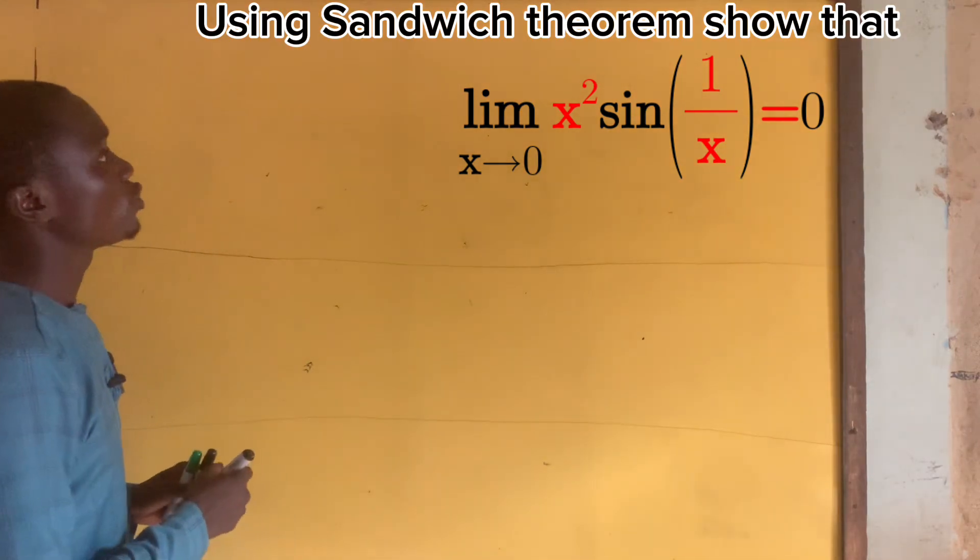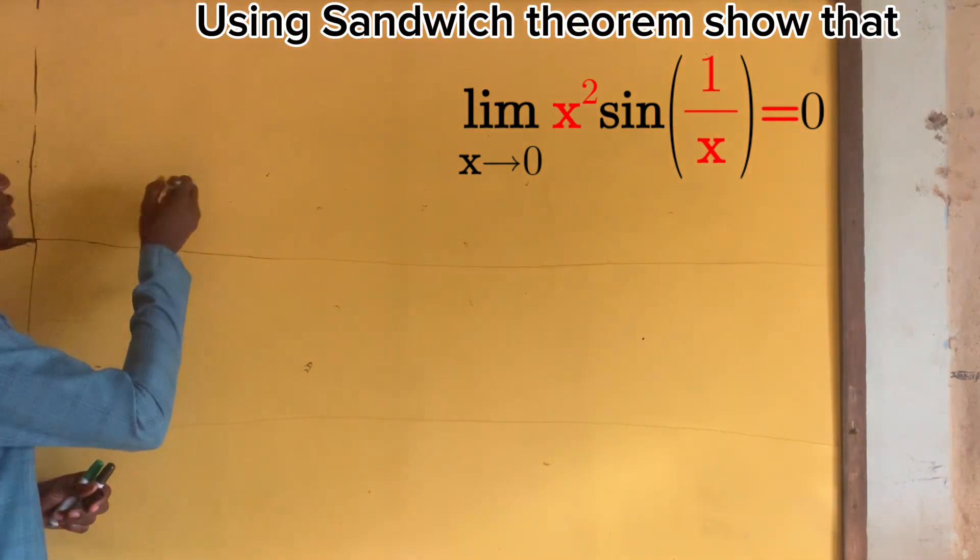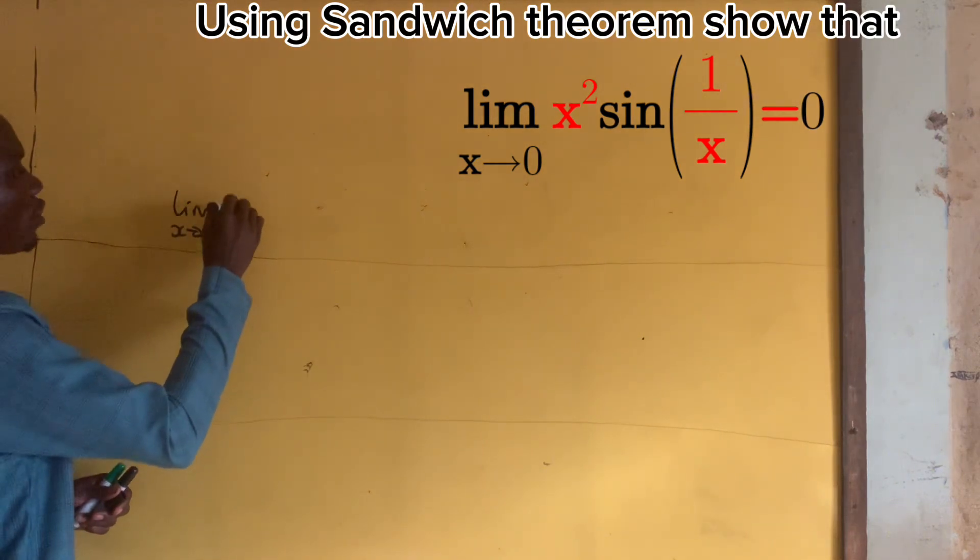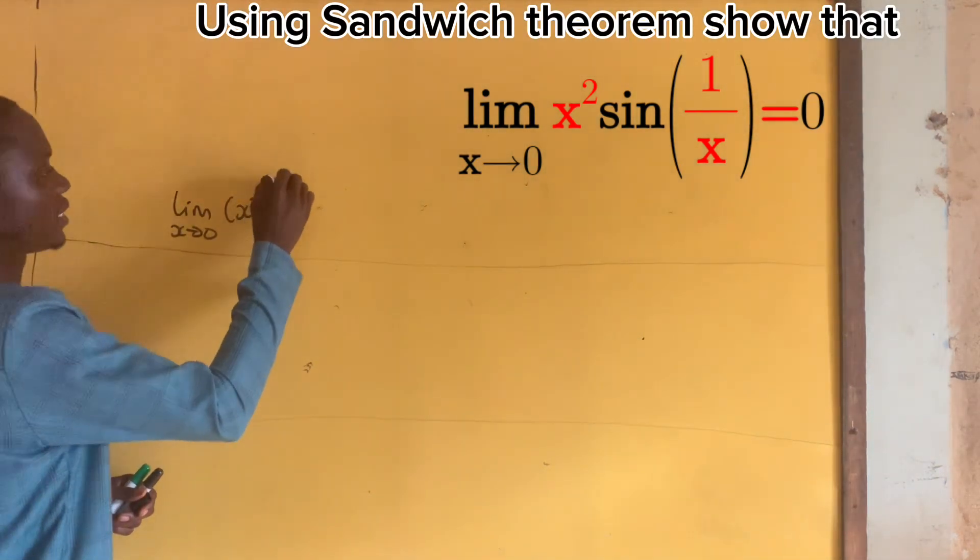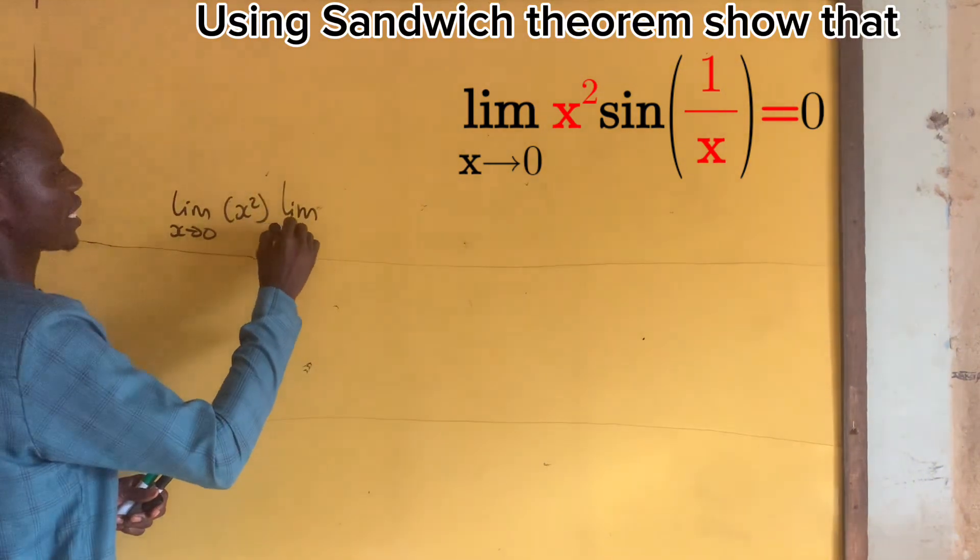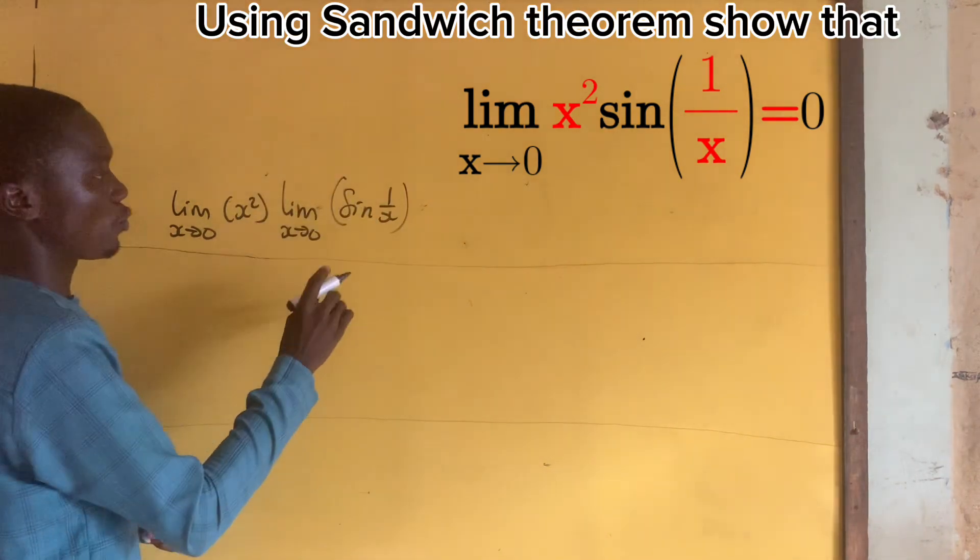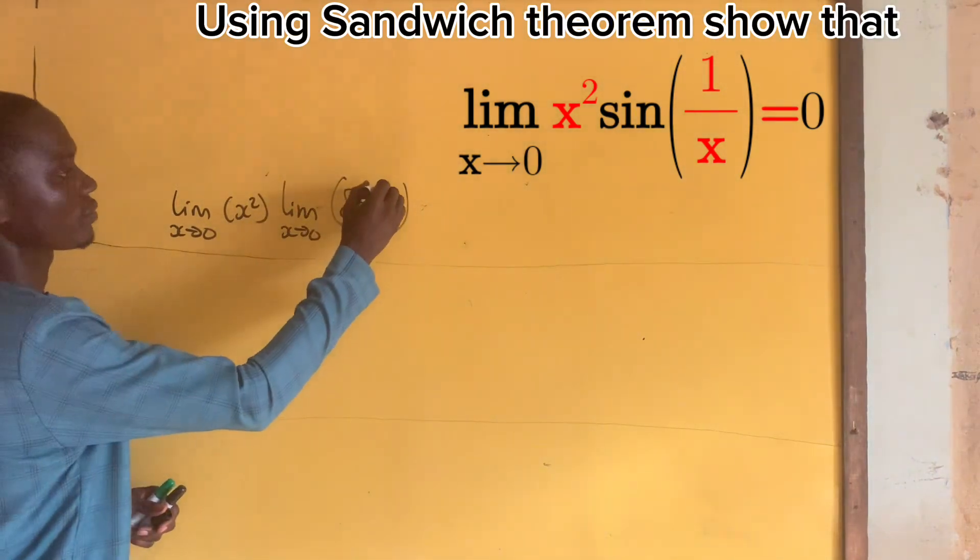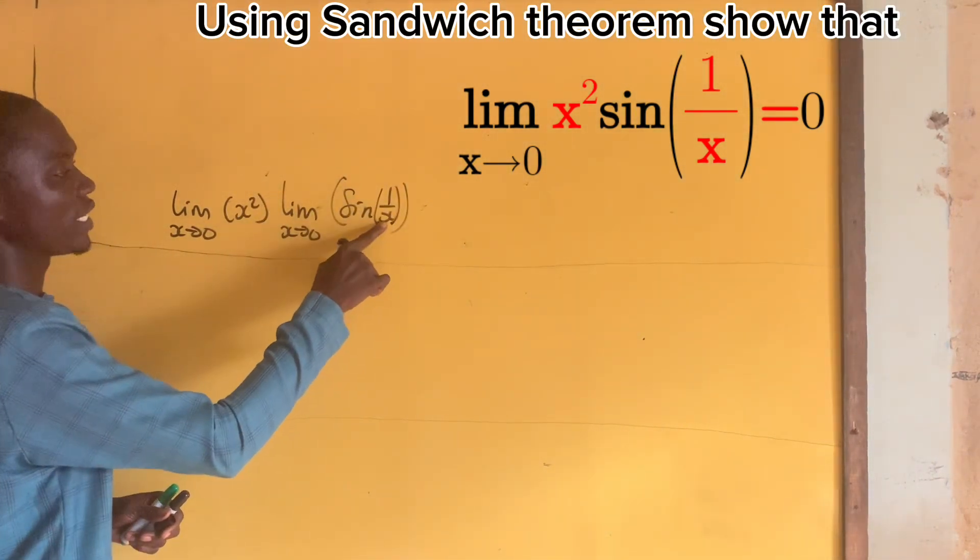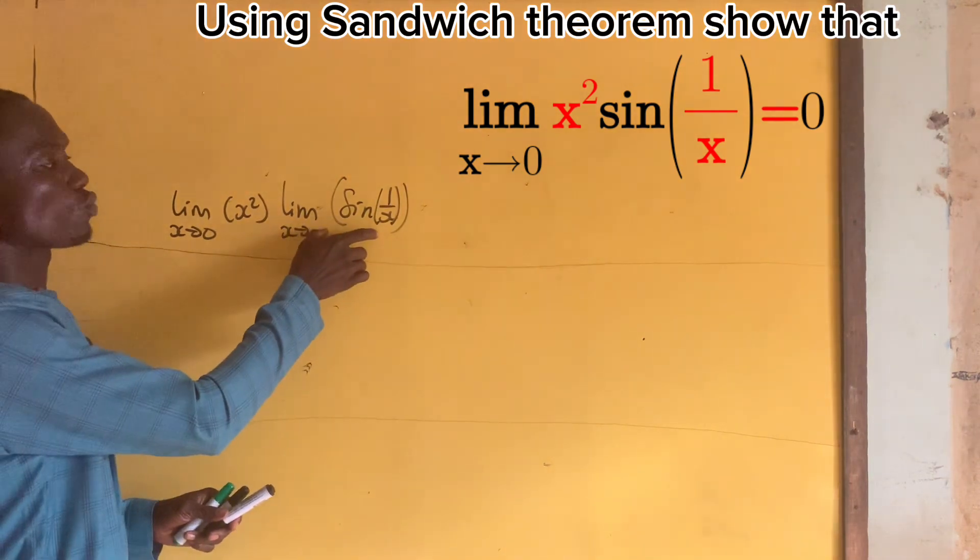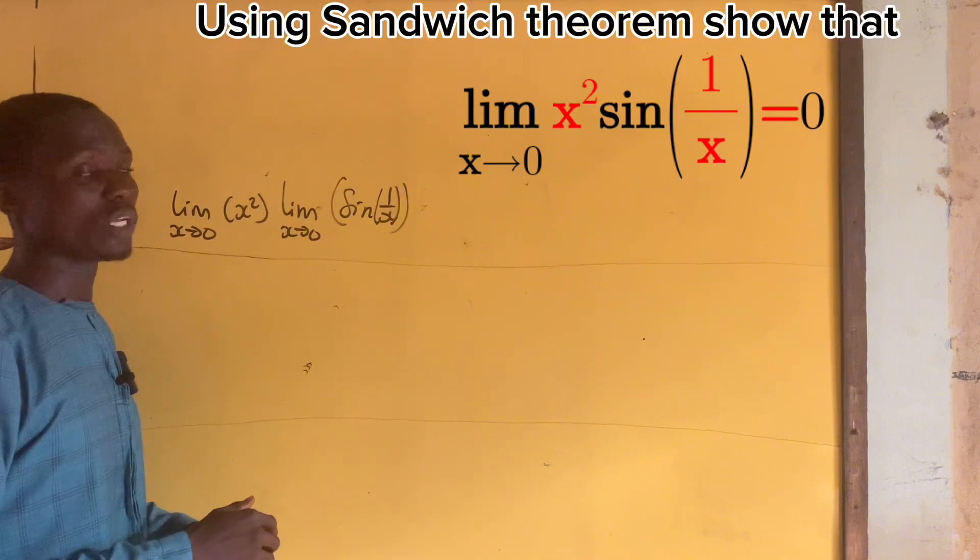Remember that we cannot take the limit as x approaches 0 of x² times the limit as x approaches 0 of sin(1/x). It won't work because if we put 0 here, this will be undefined or will not exist.